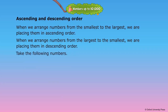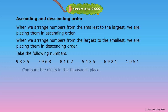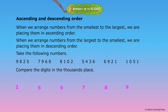Take the following numbers. Compare the digits in the thousands place. From the smallest to the greatest, that is, ascending order. So we arrange the numbers accordingly.